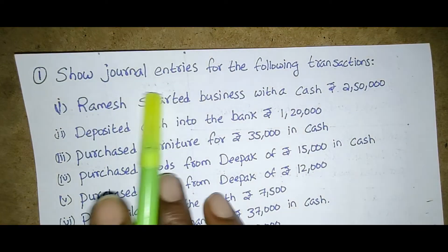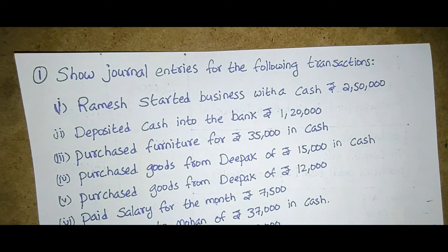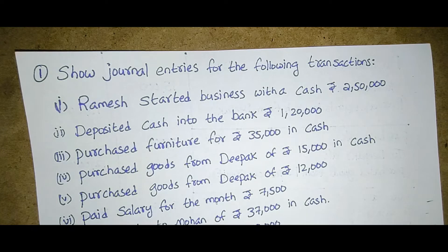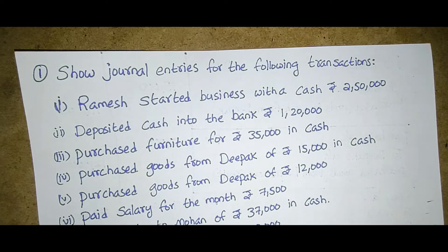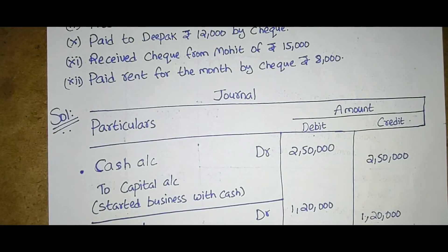The question is related to showing journal entries for the following transactions. Journal entries means the entries we have to show for the given problem. First comes the journal, second comes the ledger, and third comes the trial balance. Based on the question and the marks, we go for the solution. Sometimes you may be asked only for the journal, only the ledger, only the trial balance, or only the balance sheet.